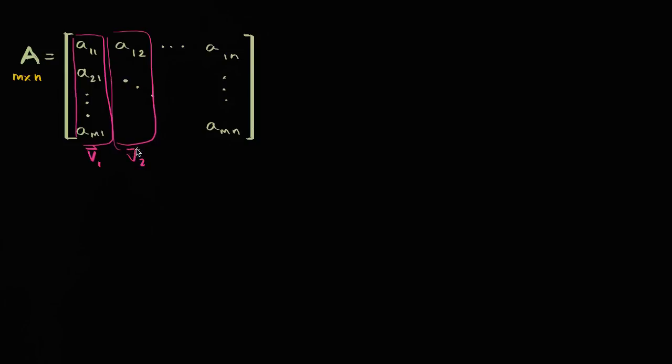What are the column vectors? There are N columns, and we can view each of those as an M-dimensional vector. We could write the first column as V1, the next one as V2, and so on. We would have N of these because we have N columns, so the last one would be V sub N.